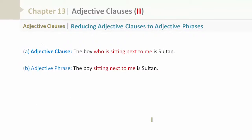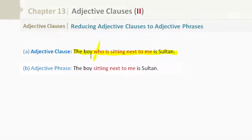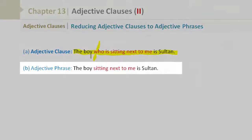Now, reducing adjective clauses to adjective phrases. Let's take a look at an adjective clause: 'The boy who is sitting next to me is Sultan.' Now, reduce it to a phrase: 'The boy sitting next to me is Sultan.' Basically, remove 'who is'.